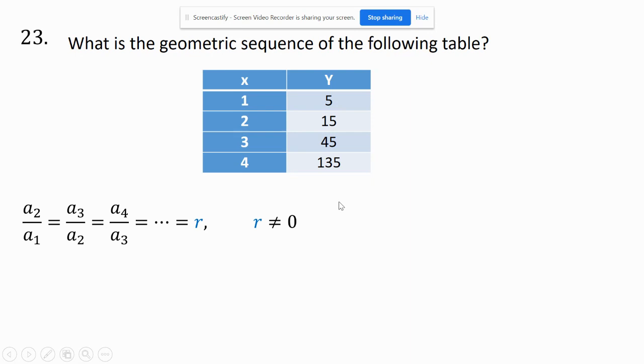If you take each term and divide it by the previous term, like a₂ divided by a₁, a₃ divided by a₂, a₄ divided by a₃, taking one term and dividing it by the previous one will equal your r.